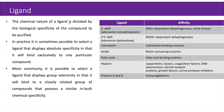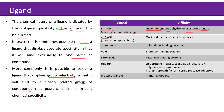Regarding the ligand, its chemical nature is dictated by the biological specificity of the compound to be purified. In practice, it is sometimes possible to select a ligand that displays absolute specificity, binding exclusively to one particular compound. More commonly, a ligand displays group selectivity, binding to a closely related group of compounds with similar chemical specificity. The table shows examples of ligands and their affinities: 5-adenosine monophosphate has affinity for NAD⁺-dependent dehydrogenase and some kinases; 2,5-adenosine diphosphate has affinity for NADP⁺-dependent dehydrogenase; calmodulin has affinity for calmodulin-binding enzymes; avidin has affinity for biotin-containing enzymes.